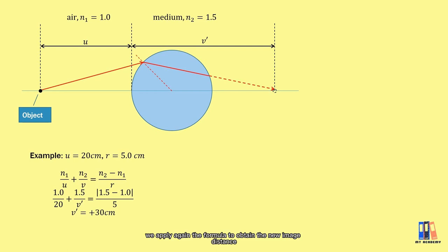So here, we will apply again the formula to obtain the new image distance. The first image formed previously will become the virtual object for the second refraction. It is virtual because it doesn't form yet in the actual situation.